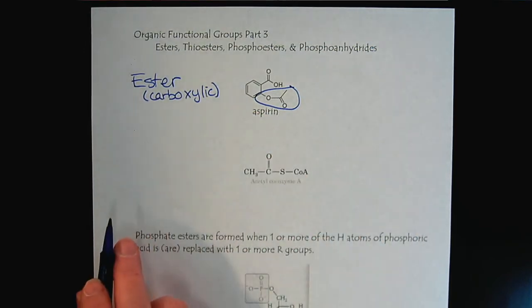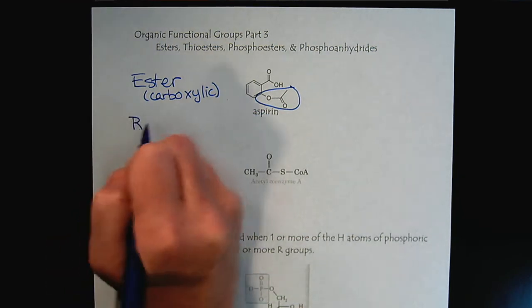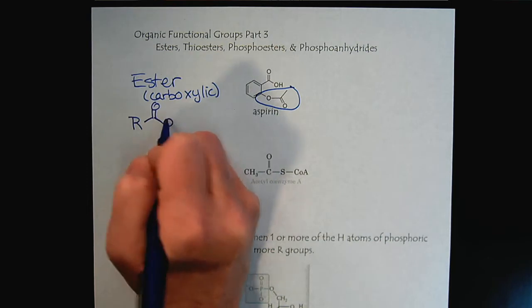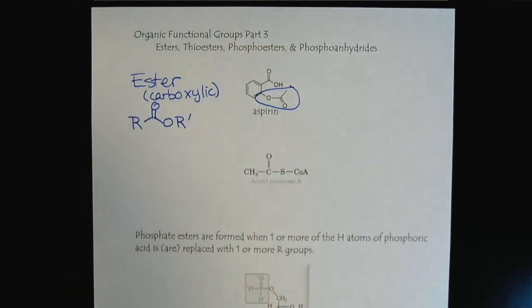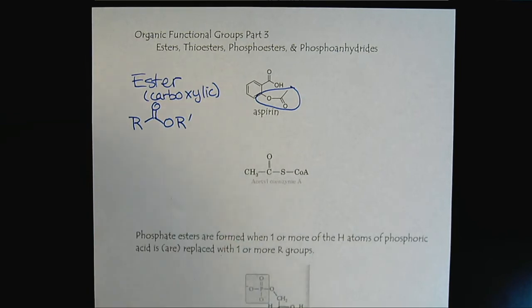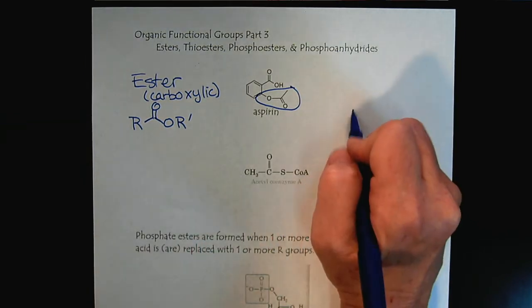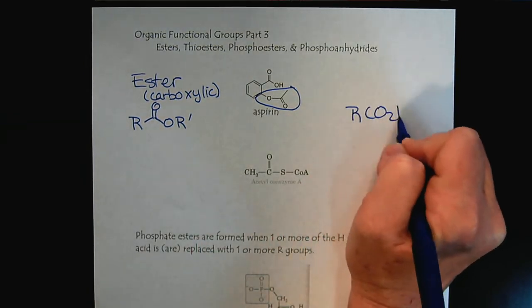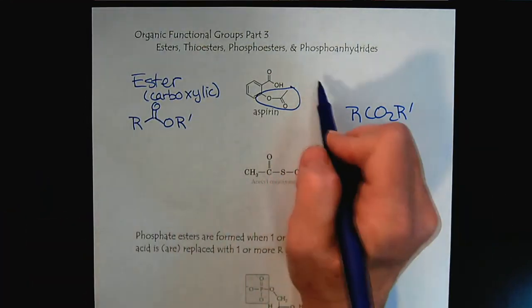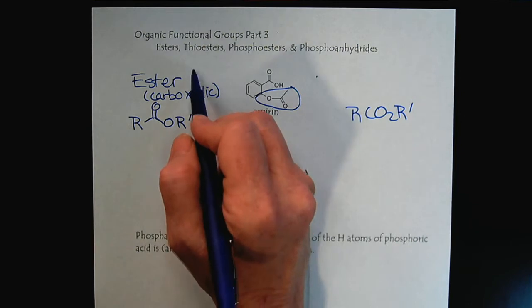And so we would give the condensed formula of, or we could have this generic structure here of R, O, the double O, R prime, for the condensed formula CO2R prime. And so here is the ester group.